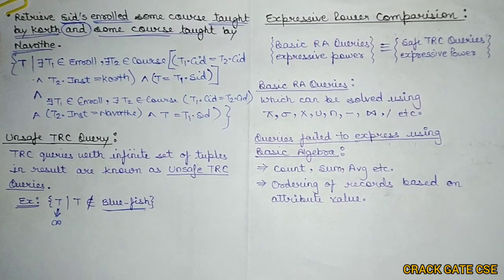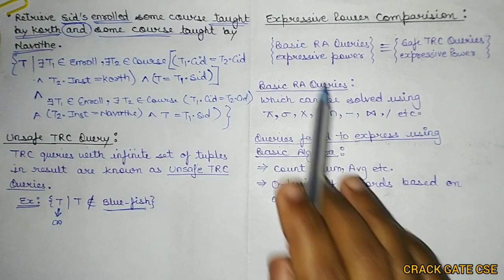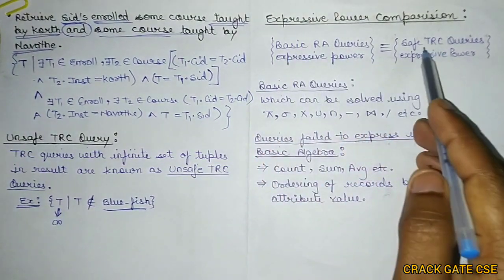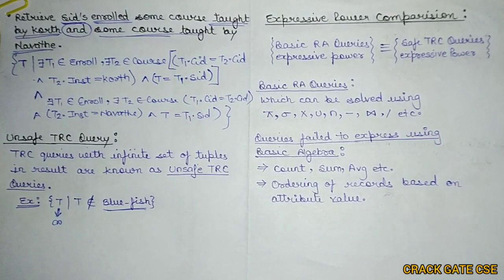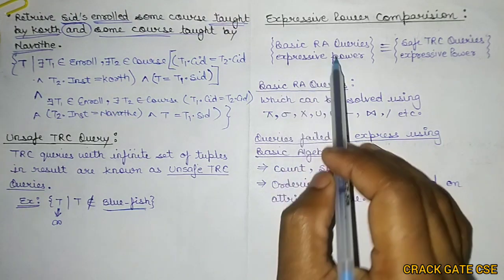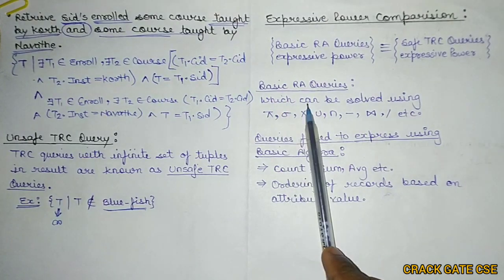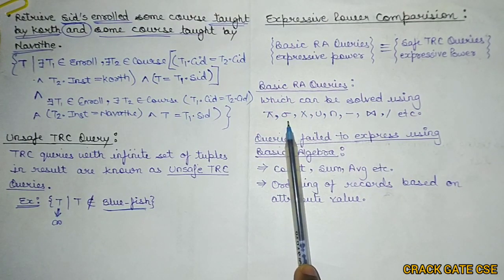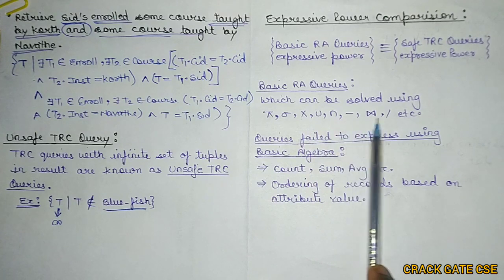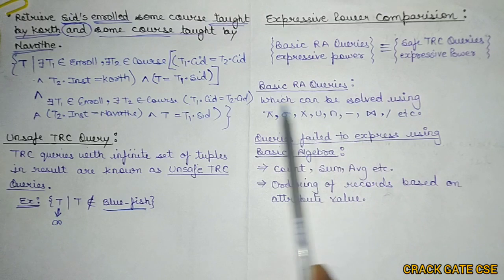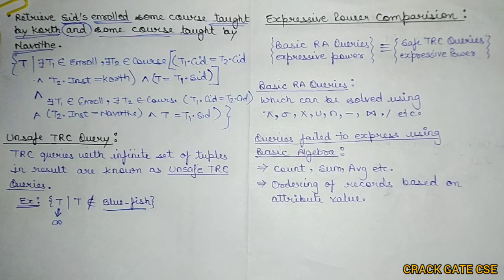Basic relational algebra queries are those queries which can be solved using projection, selection, cross product, set operators, join, and divide. So if I can solve a particular query using these basic relational algebra operators, then we call it a basic relational algebra query.